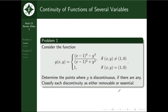Hopefully at this point may idea na kayo kung paano natin i-approach yung problem. Una, kailangan mahanap natin yung value ng function evaluated at the point. Dito, at (x,y) = (1,0), ito yung value ng function natin — technically this will be the value of G(1,0). Then second, kailangan mahanap natin yung limit, using yung expression where (x,y) is not equal to (1,0) — ito yung may-going graph ng function natin.